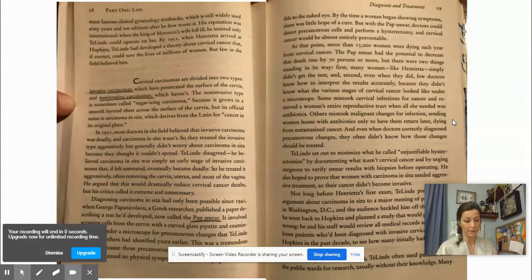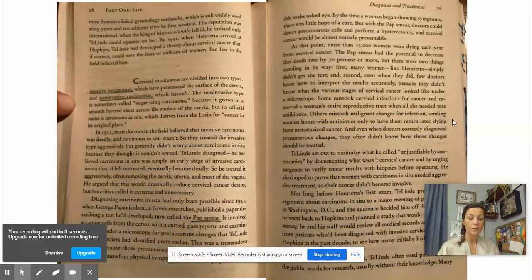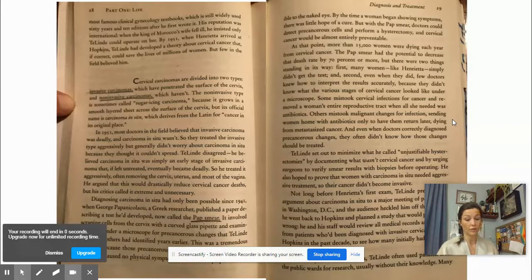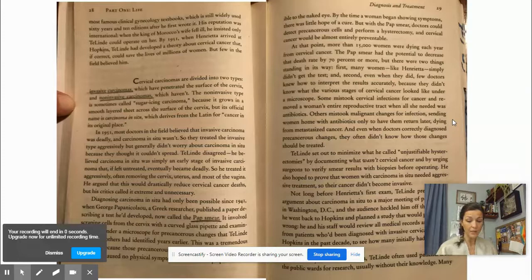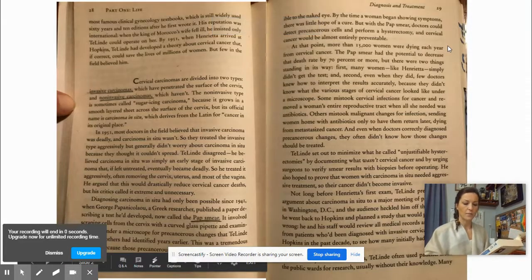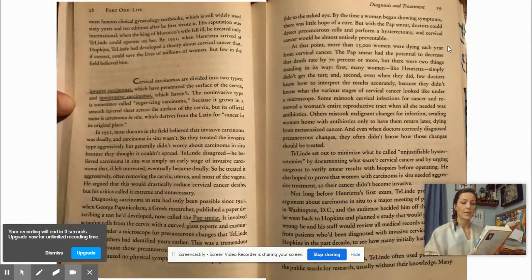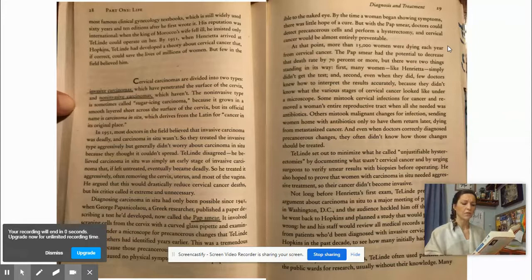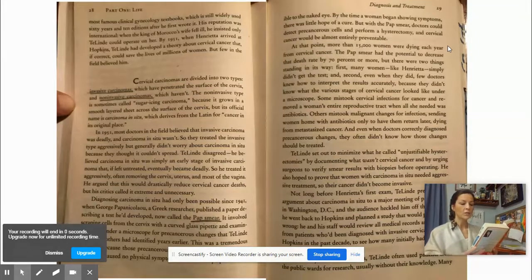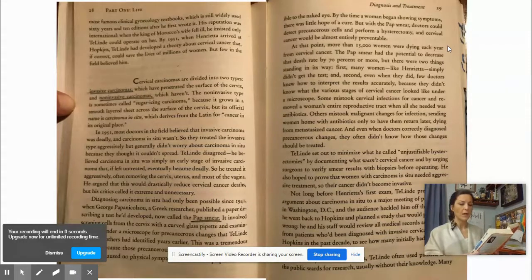First, many women like Henrietta simply didn't get the test. And second, even when they did, few doctors knew how to interpret the results accurately because they didn't know what various stages of cervical cancer looked like under a microscope. Some mistook cervical infections for cancer and removed a woman's entire reproductive tract when all she needed was antibiotics. Others took malignant changes for infection, sending women home with antibiotics only to have them return later, dying from metastasized cancer. Talinde set out to minimize what he called unjustifiable hysterectomies by documenting what was cervical cancer and by urging surgeons to verify smear results with biopsies before operating.